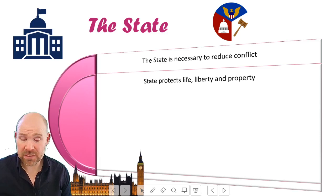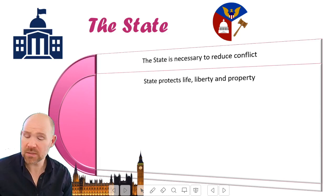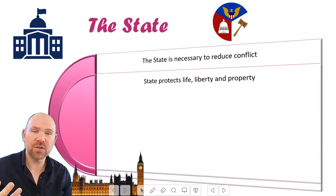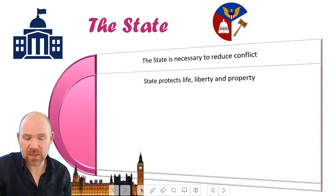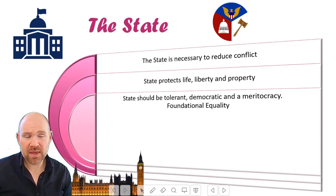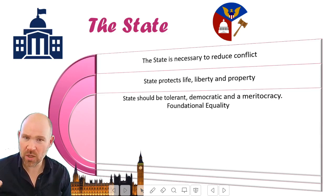Although liberals have an optimistic view of human nature, that doesn't mean they think all humans are intrinsically good or nice. It's just that they have an optimistic view that we can be made to better ourselves and, if given the right circumstances, use our rationality to make right choices. But if you are using egotistical individualism to make choices that benefit you, those choices are likely to be harmful to others. The state is there to make sure those choices never infringe on anyone else's life, liberty, or property. The state should be tolerant, there through democratic means, and should enable a meritocracy.